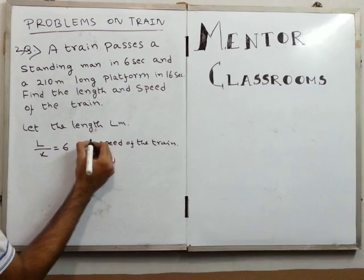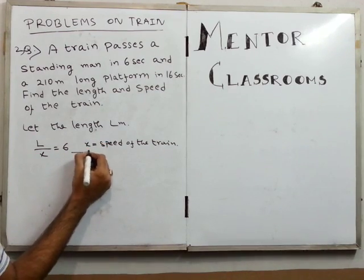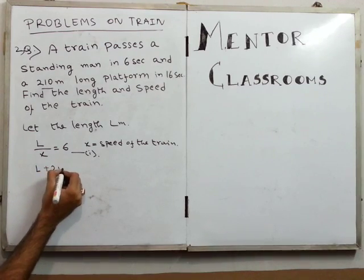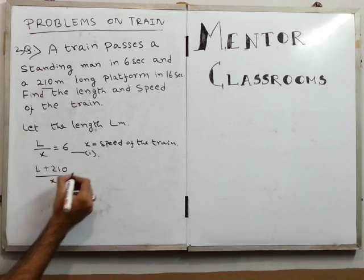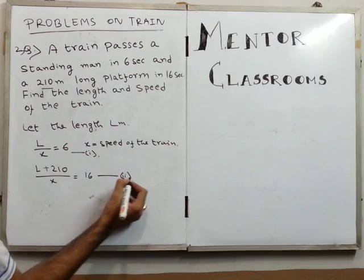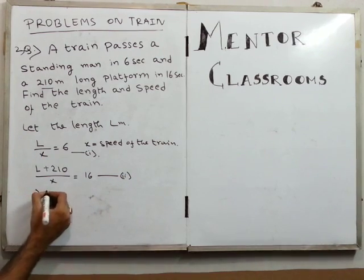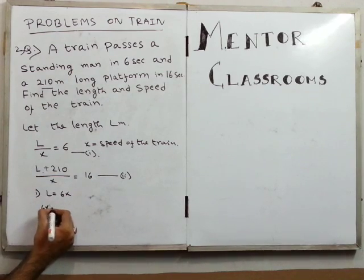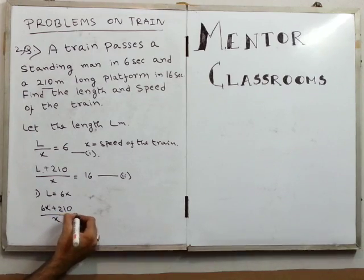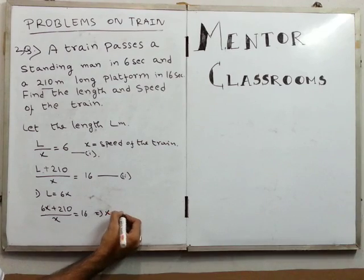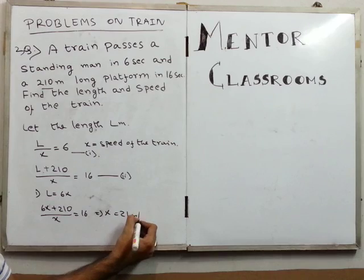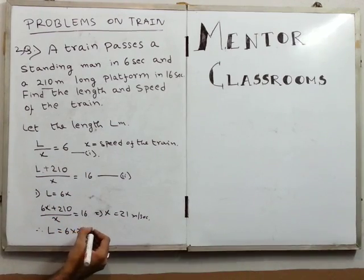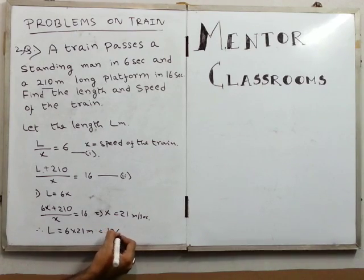The second equation: the train crosses the 210-meter platform, so L plus 210 divided by x equals 16. From the first equation, L equals 6x. Substituting into equation 2: 6x plus 210 divided by x equals 16. Calculating, we get x equals 21 meters per second. The length of the train is 6 multiplied by 21, which is 126 meters.